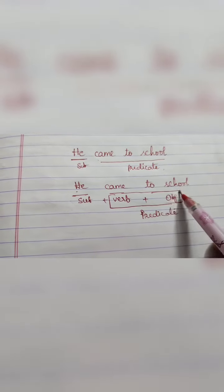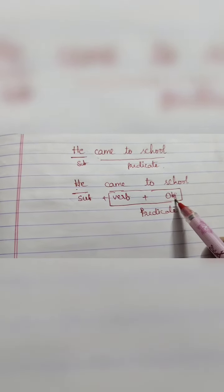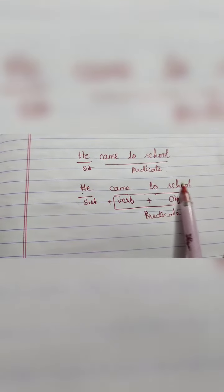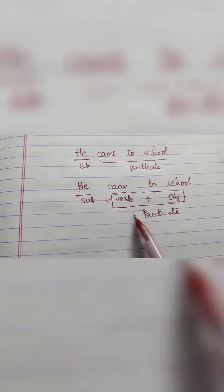So apart from the subject, the remaining part is called predicate. In that predicate, there will be a verb and there will be an object.